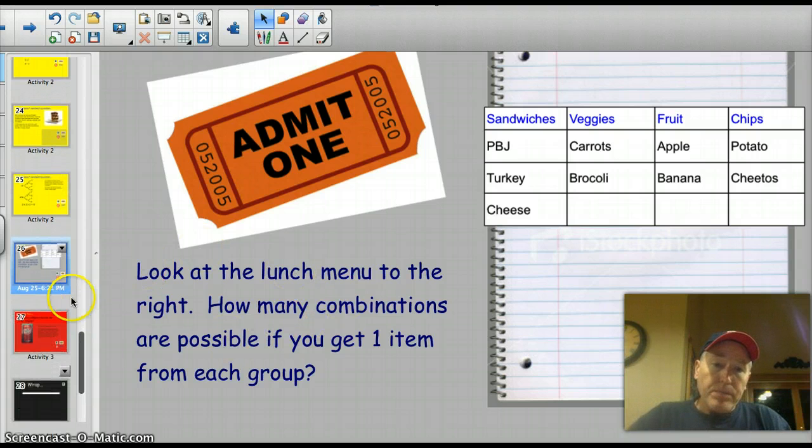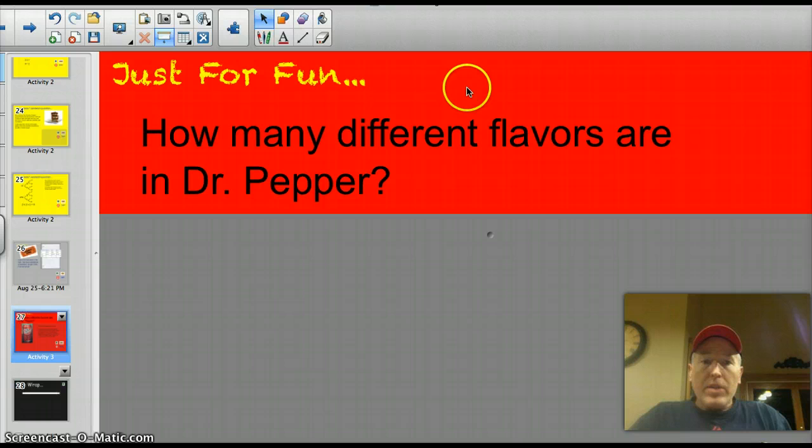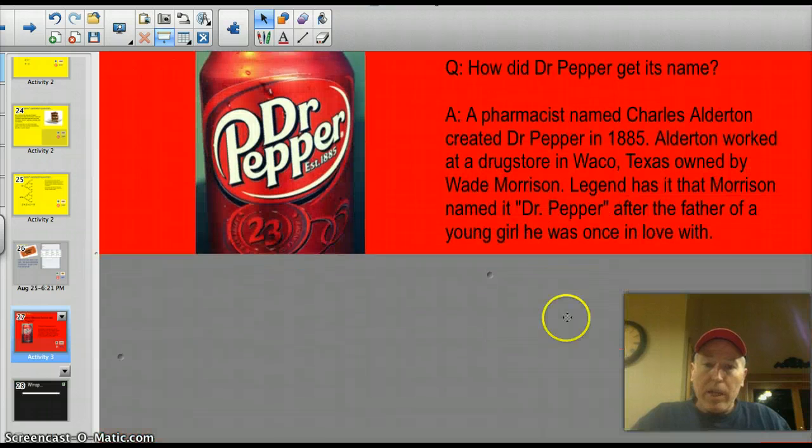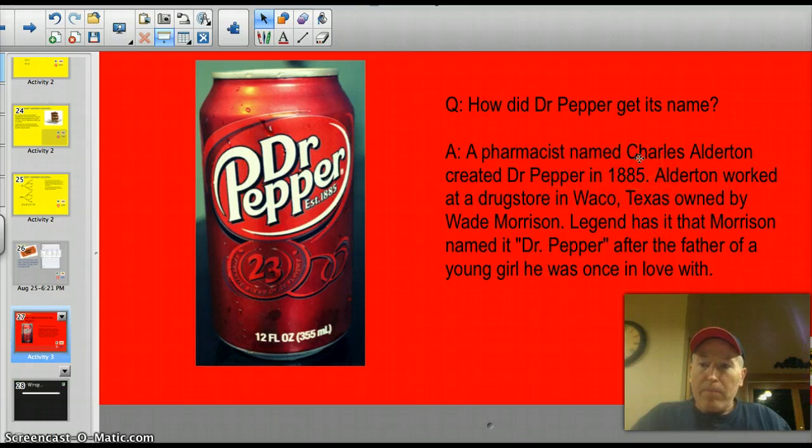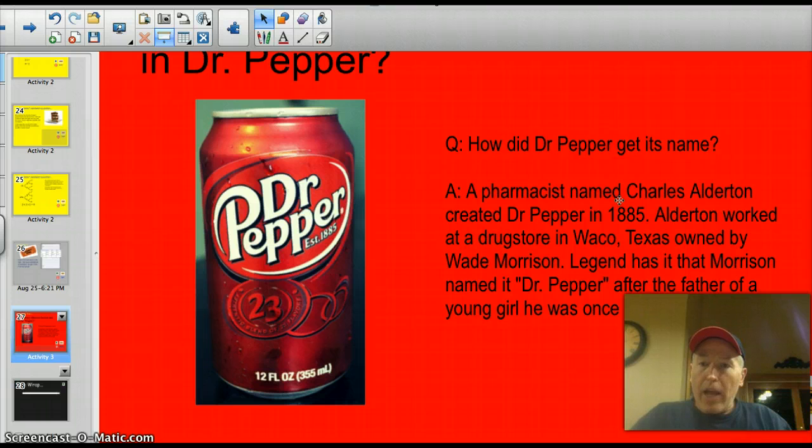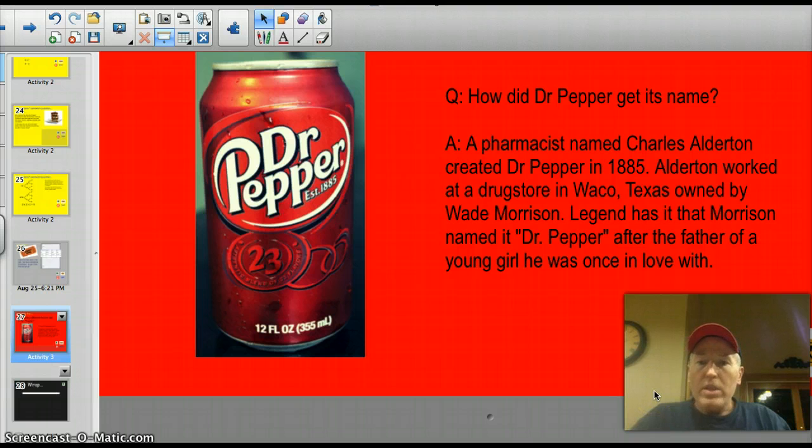All right. The answer to tonight's trivia question. I'm going to scroll up just in case my picture's in the way. The answer to tonight's trivia question. How many different flavors are there in Dr. Pepper? Well, it says right on the can. I don't know if you've ever noticed that before. There are 23 different flavors. Better question. How did Dr. Pepper get its name? A pharmacist named Charles Alderton created Dr. Pepper in 1885. Alderton worked at a drugstore in Waco, Texas, owned by Wade Morrison. Legend has it that Morrison named Dr. Pepper after the father of a young girl he was once in love with. I don't think I'll remember that, but I'll remember the 23 flavors. Just a little trivia to end your night. Thanks for listening. Have a good evening.